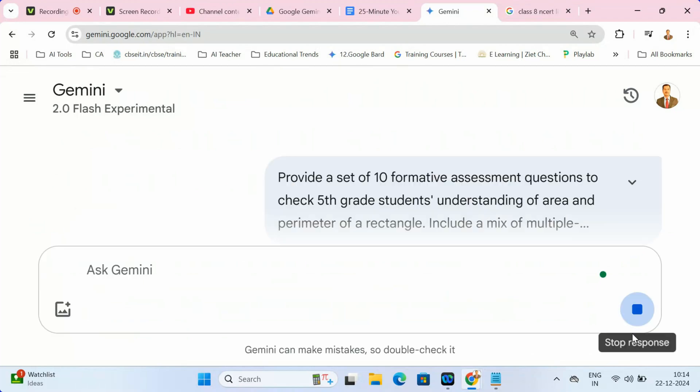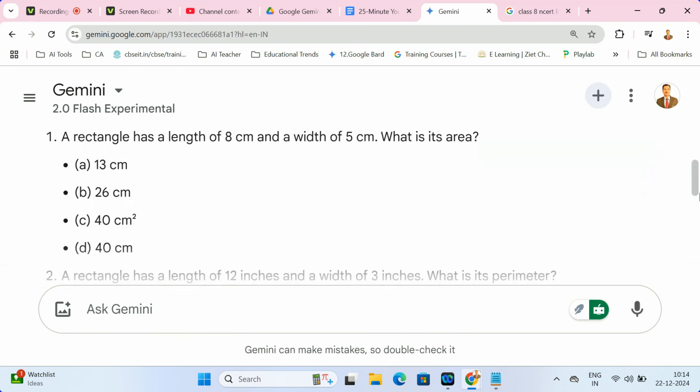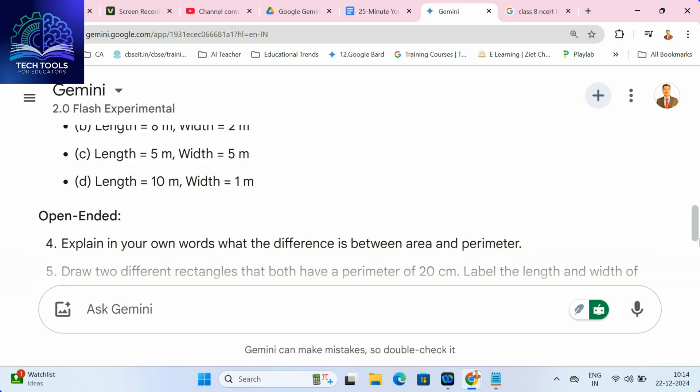Check for understanding on the fly with this prompt. Gemini gives you ready-to-go questions like, what's the area of a rectangle with a length of five and a width of three? And explain how to find the perimeter of a square. Perfect for quick checks.